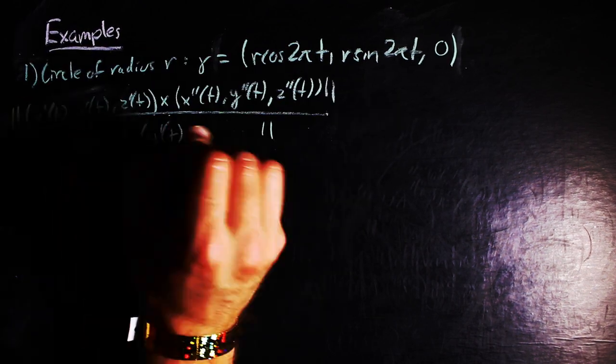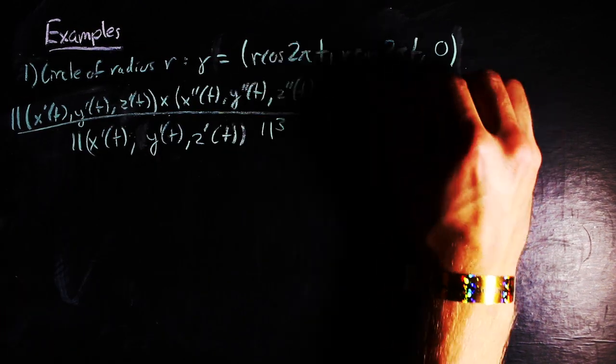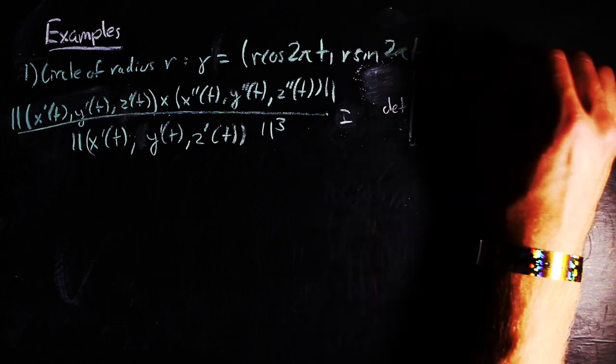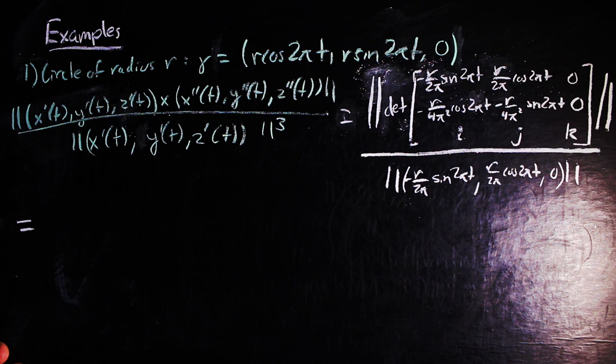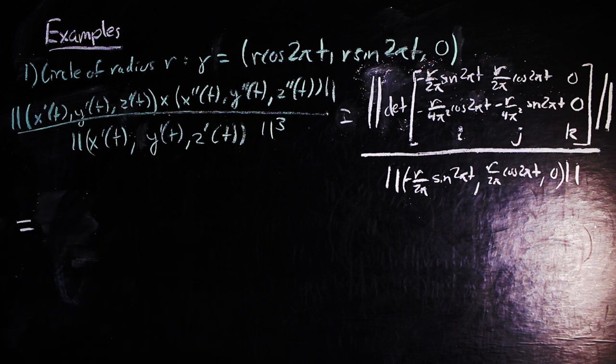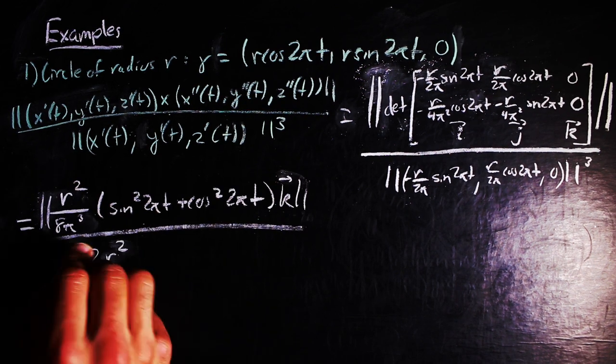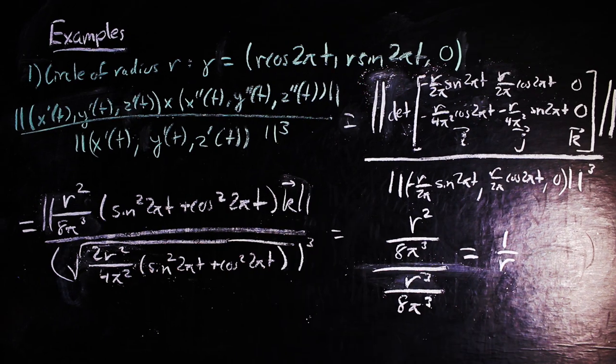Using the cross product formula for the curvature and the definition of cross product, we end up getting this massive daunting expression that ends up being quite tame. You can keep reducing it, and it reduces down eventually to one over the radius of your circle.